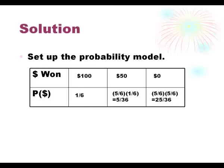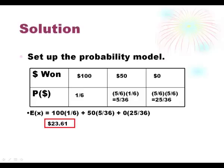Now you're going to find the expected value by doing each dollar amount times its probability. $100 times 1 sixth, $50 times 5 out of 36, and $0 times 25 out of 36. And you add them all up. So enter this in your calculator and get your expected value. You should get $23.61 if you've done this correctly.